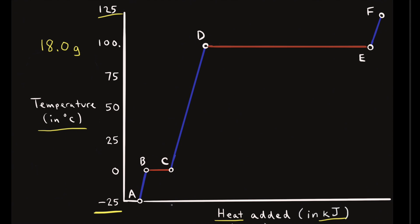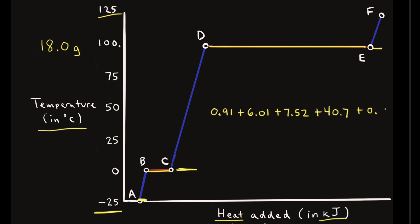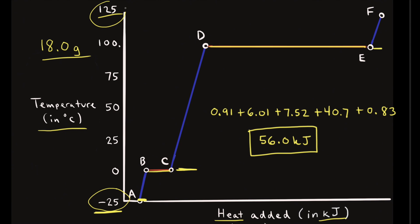Finally, we add everything up. From point A to B: 0.91 kJ. From B to C: 6.01 kJ. From C to D: 7.52 kJ. From D to E: 40.7 kJ. From E to F: 0.83 kJ. Adding all of these together equals 56.0 kilojoules. That's how much energy it takes to convert 18.0 grams of ice at negative 25 degrees Celsius to gaseous water at 125 degrees Celsius.